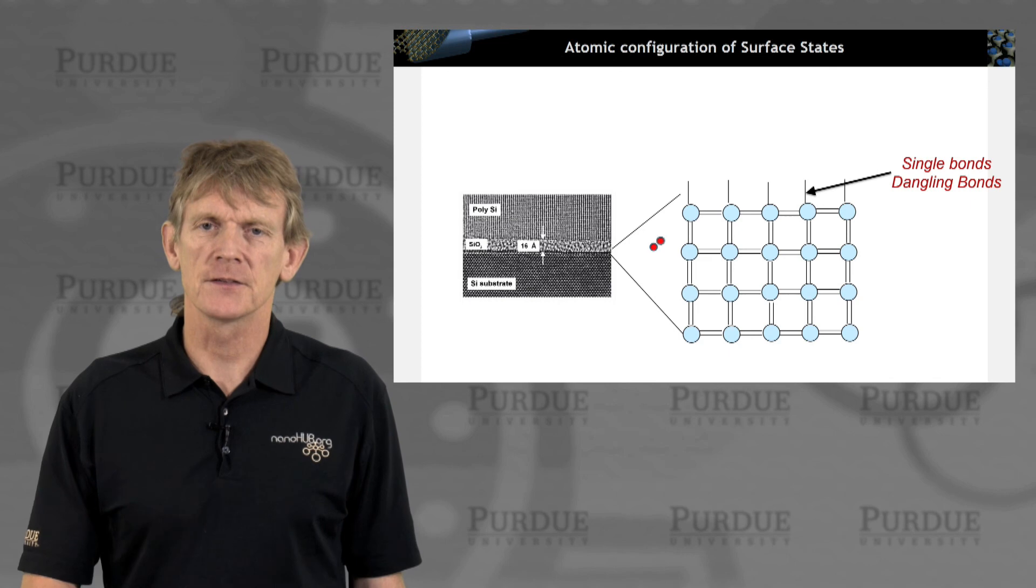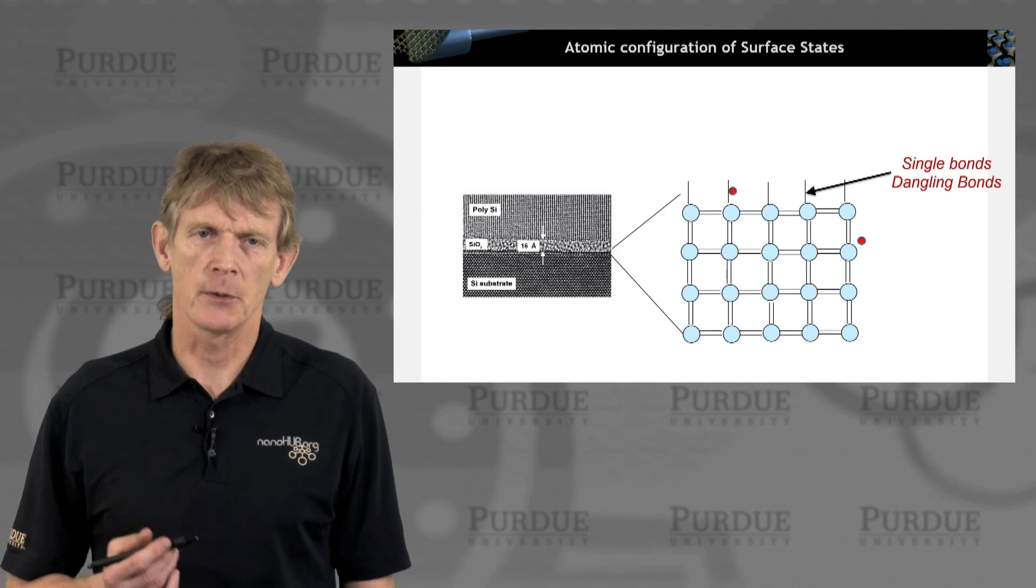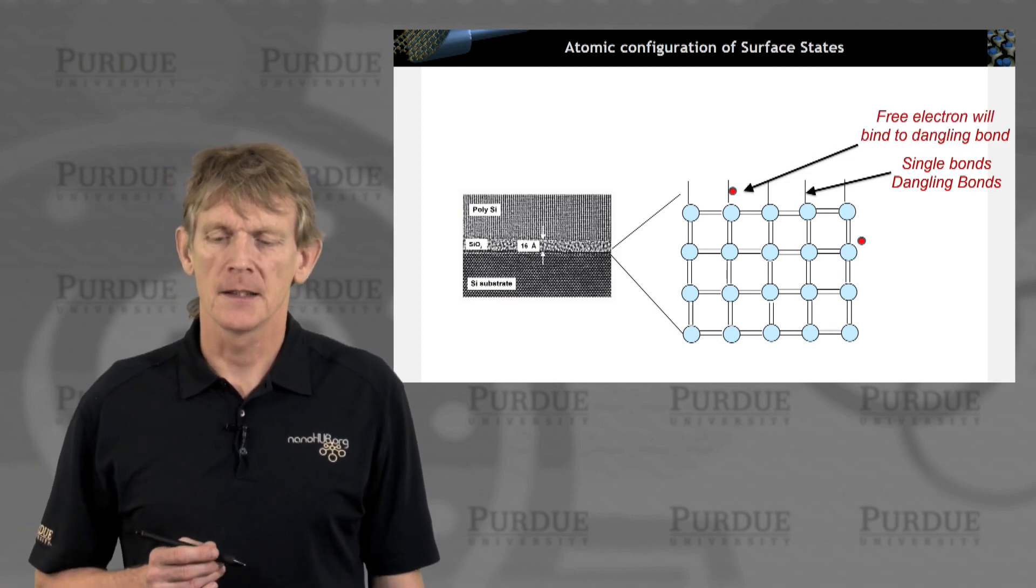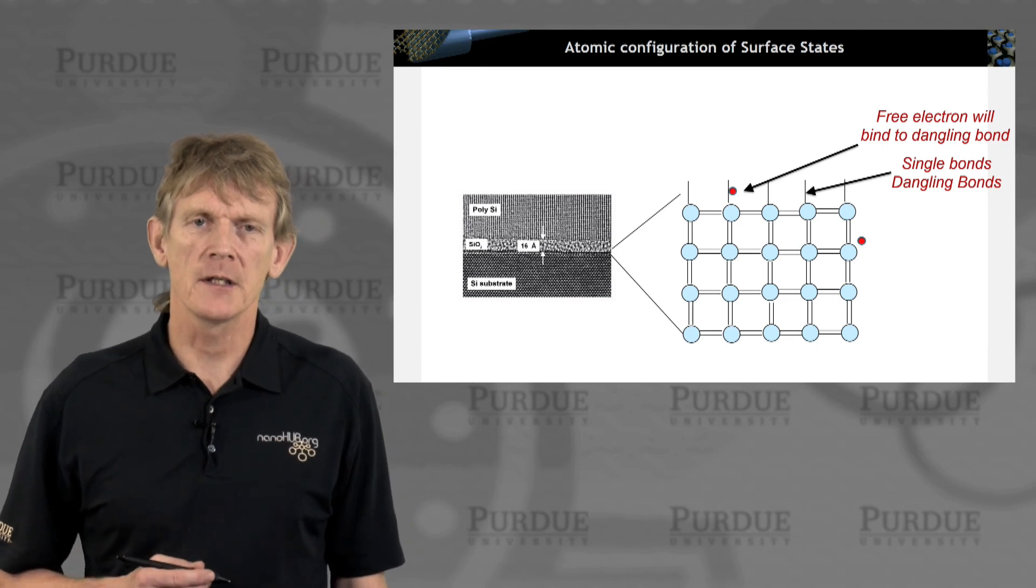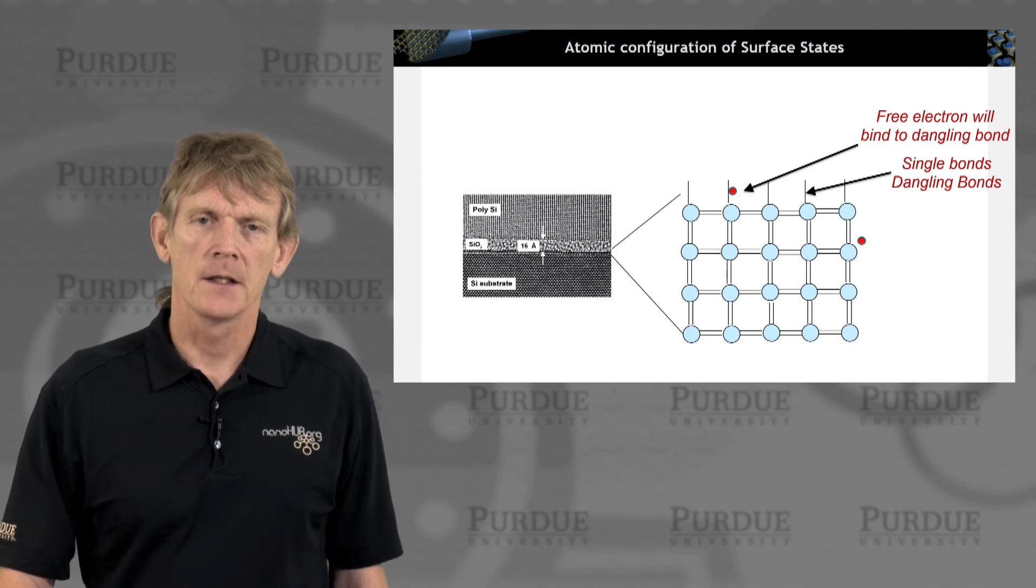You might have electrons that still flow through the system. But eventually, you'll also find an electron that likes to satisfy this bond. It will bind to this dangling bond and will no longer be a free electron, unless some other force drives it away.